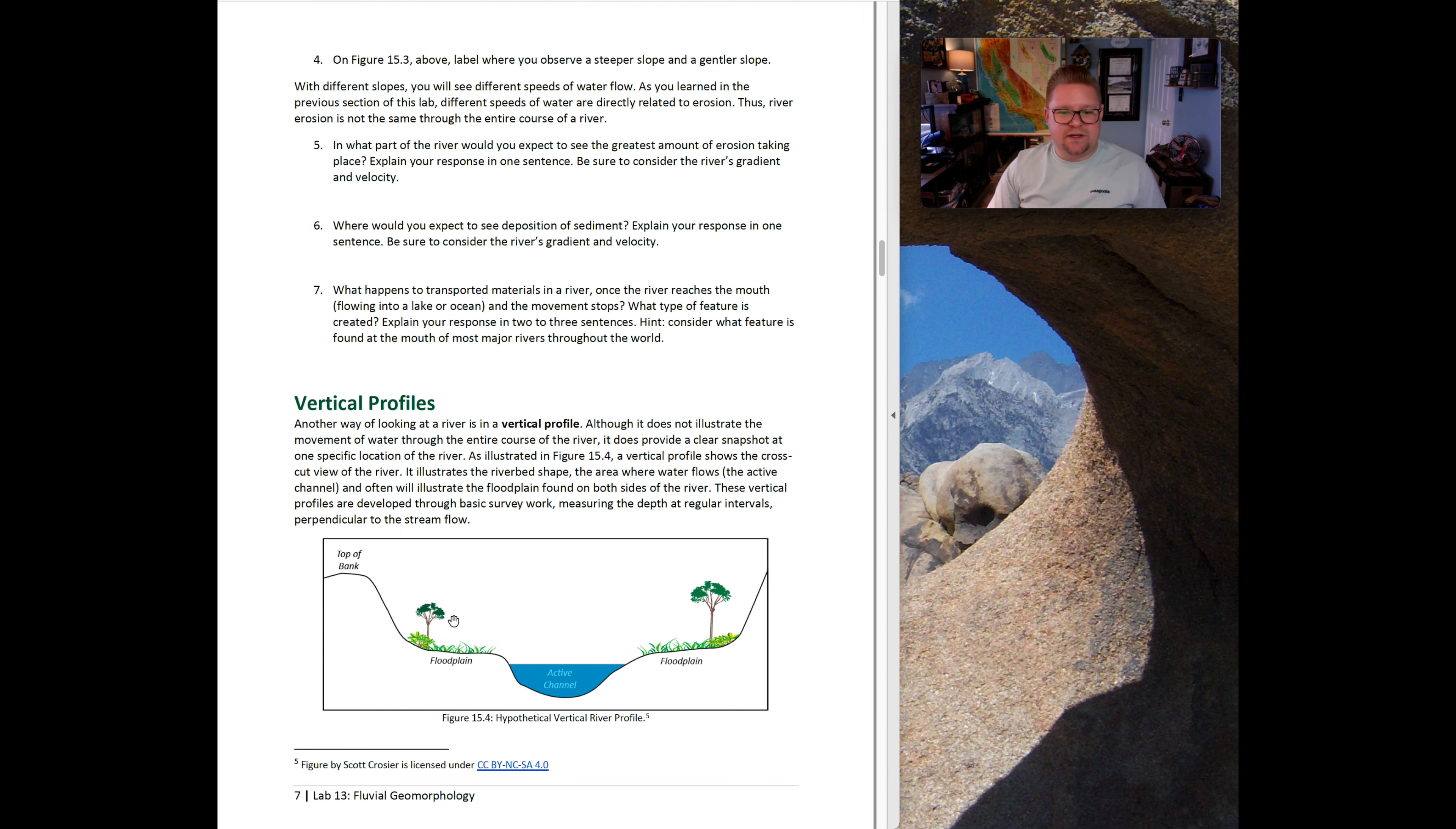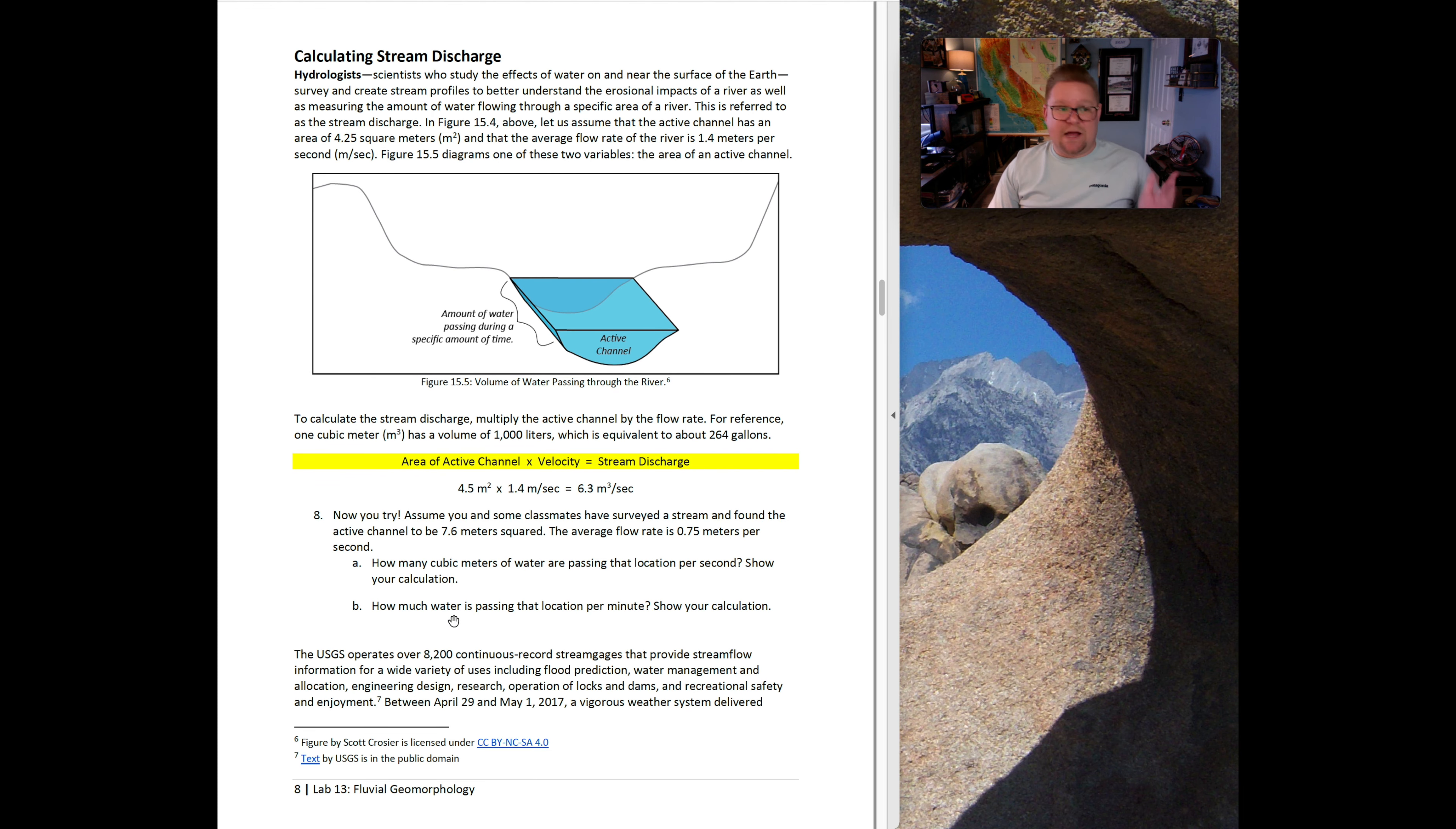Calculating stream discharge: those profiles are quite helpful in understanding. Hydrologists or people who study water want to learn how to calculate the most effective way of what discharge is. Discharge, the formula being Q, is equal to the area, the active area of the channel times the velocity. This can be done by looking at a cross-sectional profile. To calculate stream discharge, multiply the active channel by the flow rate or the area by the velocity.